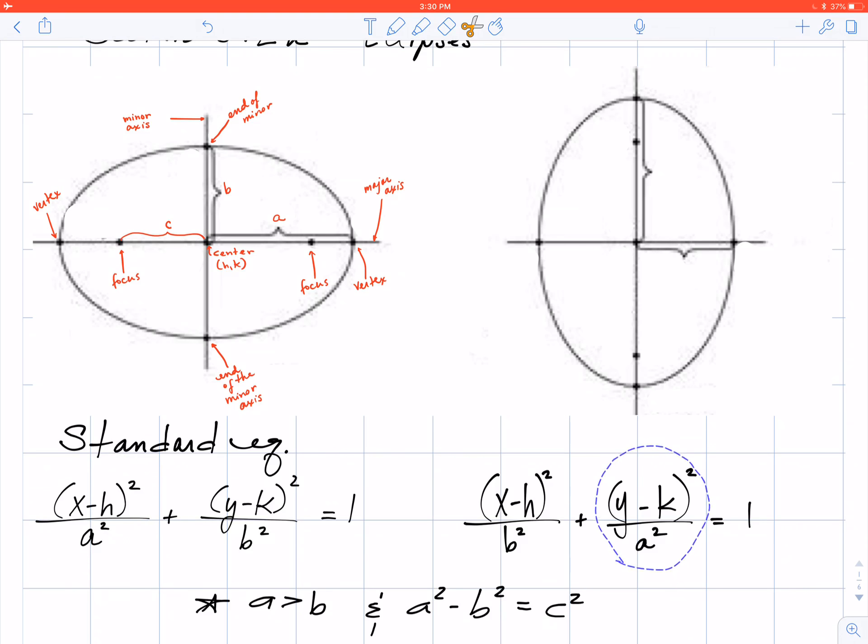For my other equation, my larger denominator is under the y's. And what you have is when the larger denominator is under the y's, I end up with a vertical ellipse like you see above. And when my larger denominator is under the x's, I have a horizontal ellipse.